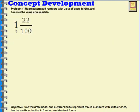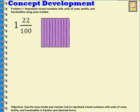Here we have 1 and 22 hundredths. I'm going to first represent that using area models. I have one whole, so when I do my area model, I'm going to have the whole thing shaded in. But what do I do with the 22 hundredths? In cases when you have a whole and a part of another whole, you're going to use more than one area model.